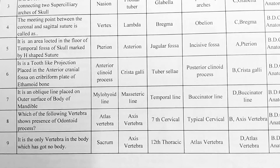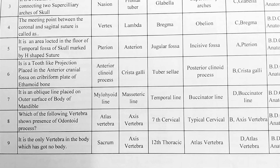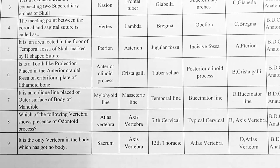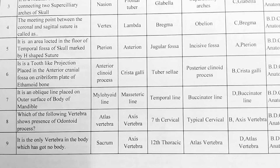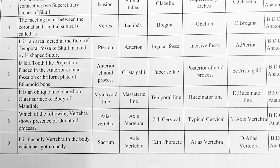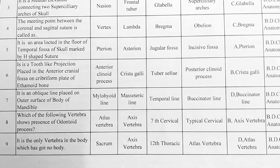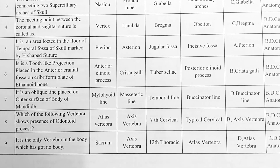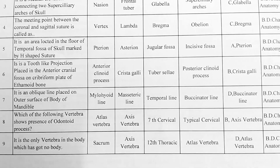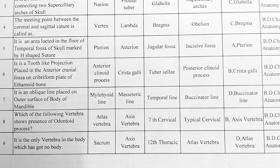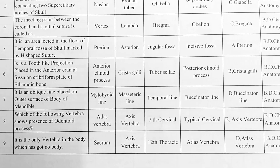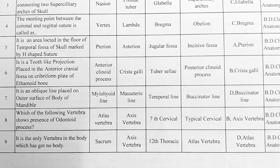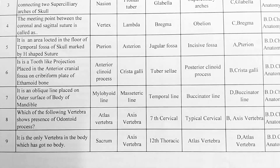Next. It is an area located in the floor of temporal fossa of the skull, marked by an H-shaped suture. Options — A: pterion, B: asterion, C: jugular fossa, D: incisive fossa. Option A is correct, pterion.